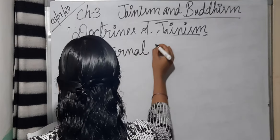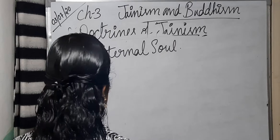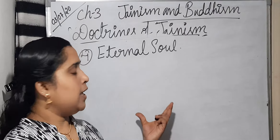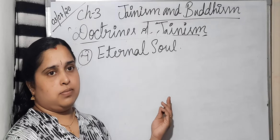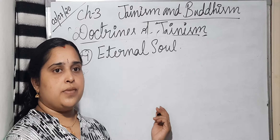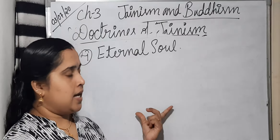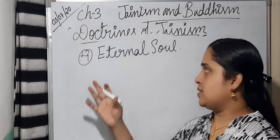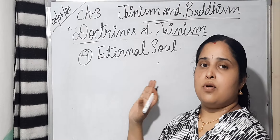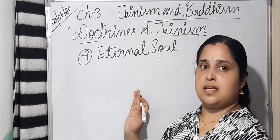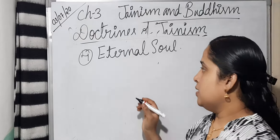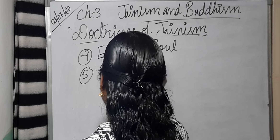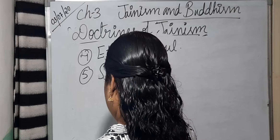The fourth doctrine is Eternal Soul. Mahavira believed in the immortality of the soul — that is, Atma. He said that the body dies but the soul does not die. Eternal soul means the body will die whereas the soul will not die.